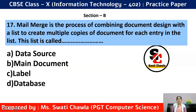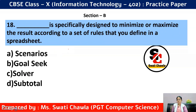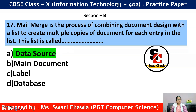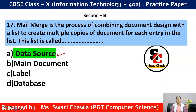Question 17: Mail merge is the process of combining document design with a list to create multiple copies of a document for each entry in the list. This list is called a dash. The correct answer is option A — Data Source. In mail merge, you have a main document with the text, and a data source file containing the details/addresses of all recipients, which together produce the final merged document.